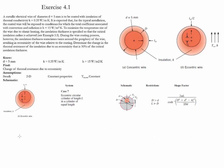Let's now evaluate the eccentric wire case. If we noticed from table 4.1, we could see that this system corresponds to case 7. This is the schematic, the restrictions, and the shape factor.